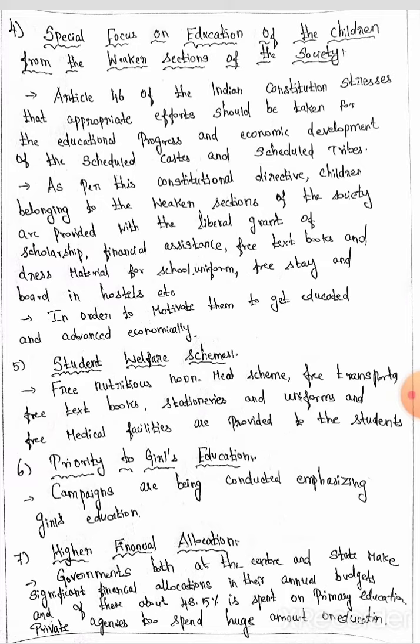Priority is given to girls' education. Higher financial allocation is made when the government — both central and state — makes significant financial allocation in their annual budget. Of this, about 48.5 percent is spent on primary education. Private agencies also spend huge amounts on education.